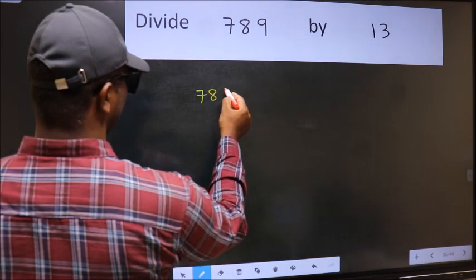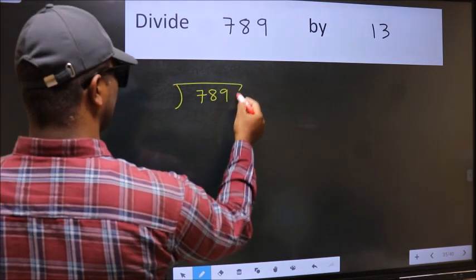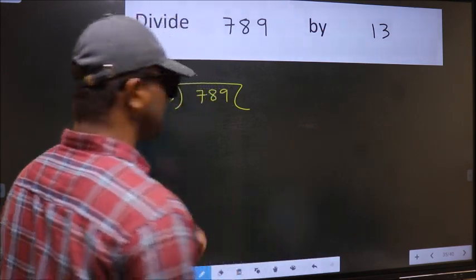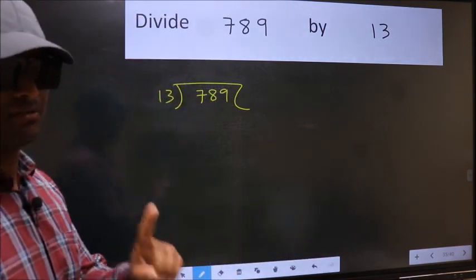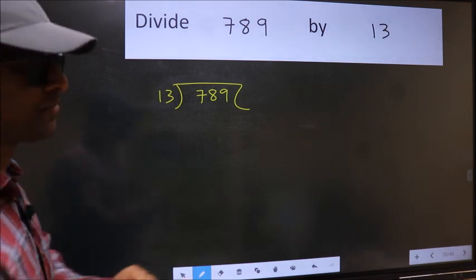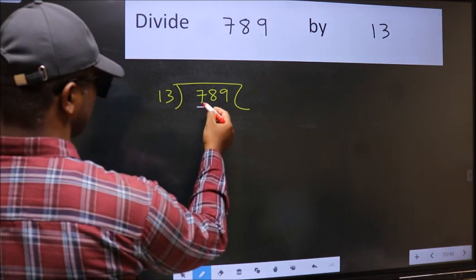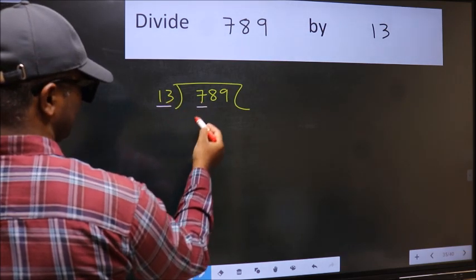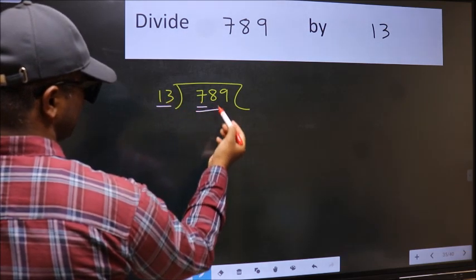789 and 13 here. This is your step 1. Next, here we have 7 and here 13. 7 is smaller than 13, so we should take two numbers 78.